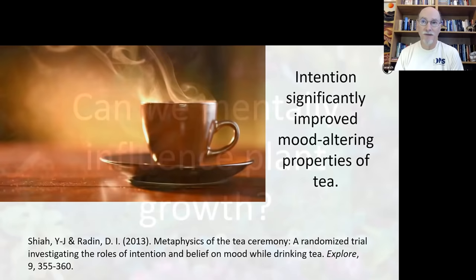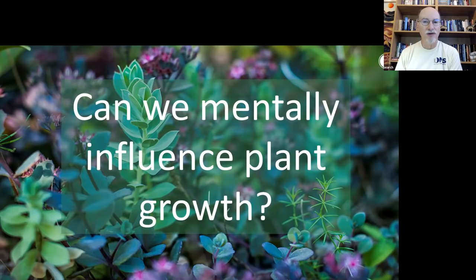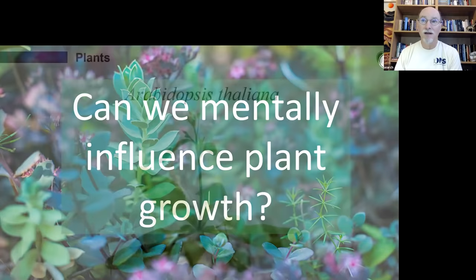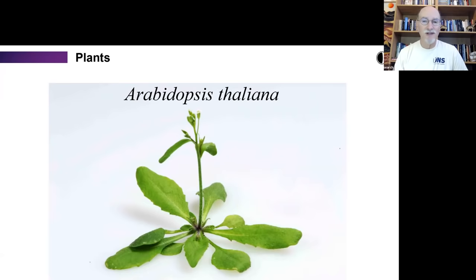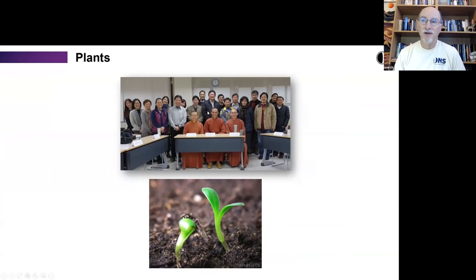So in this case, intention significantly improved the mood altering properties of tea. Then we decided to do a similar thing only without a subjective measure, but use an objective measure. In this case, plant growth. We used a little plant called Arabidopsis thaliana. It's a plant used a lot in plant physiology studies. The full genome is understood and there's a lot known about this particular plant. So here's the team in Taiwan. These are the three Buddhist monks, members of the temple.